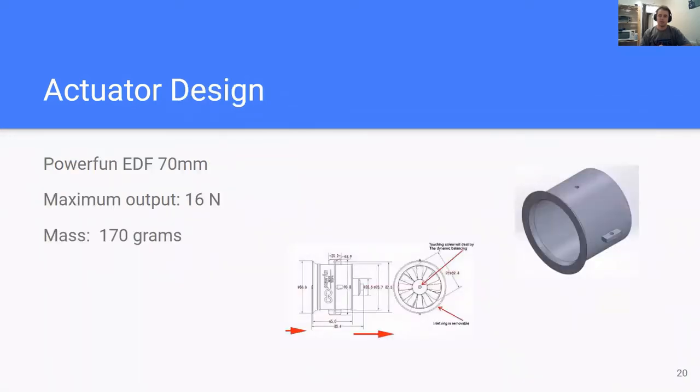We chose the PowerFund EDF 70 millimeter ducted fan. It has a maximum output of 16 newtons that weighs only 170 grams, or less than half a pound. We were unable to get the exact CAD files, however, we were able to find technical drawings and model it a placeholder to aid in the design of our system.